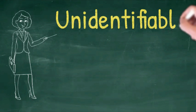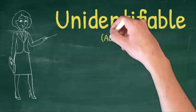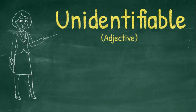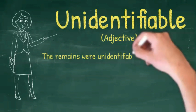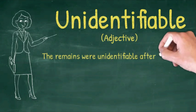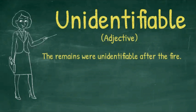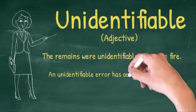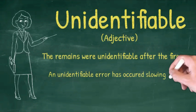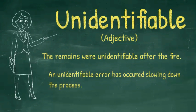Another way that identify can be used as an adjective is 'unidentifiable'. This form is also used frequently. When something cannot be identified or recognized, it is unidentifiable. The remains were unidentifiable after the fire. An unidentifiable error has occurred, slowing down the process.